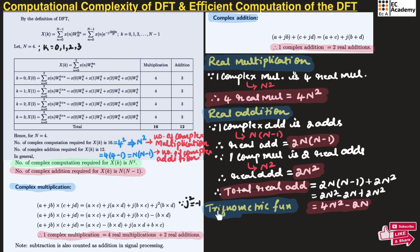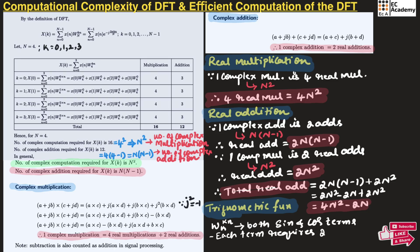Now let us understand the trigonometric function. The trigonometric function omega N to the power of kn consists of both sine and cosine terms, and each term requires two complex multiplications. Therefore, the trigonometric function computation will be equal to two N squared.